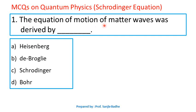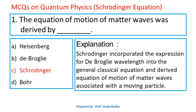Question number 1. The equation of motion of matter waves was derived by — options are Heisenberg, De Broglie, Schrödinger, and Bohr. Who derived the equation of motion of matter waves? In 1926, Schrödinger developed a rigorous theory using De Broglie's idea of matter waves. He incorporated the De Broglie wavelength into the general classical equation and derived the equation of motion of matter waves associated with a moving particle. This equation is called Schrödinger's equation. So the answer is Schrödinger.